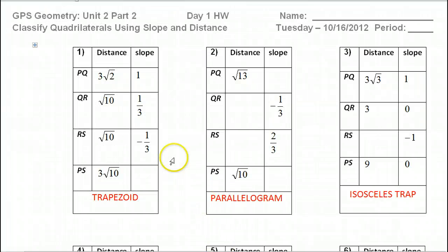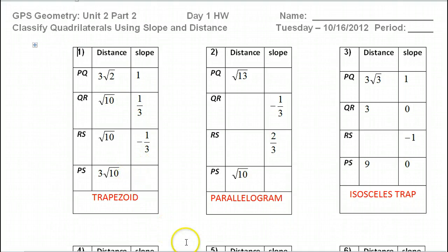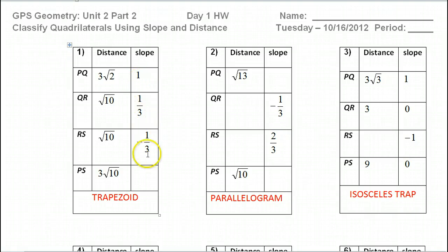Each one of these represents the sides of a trapezoid. As far as slope goes, remember that if two sides are parallel, they should have the same slope. So far we're given all of these slopes, but none of them are the same. That tells us that the remaining slope must be the same as the opposite side.